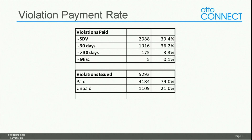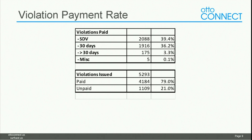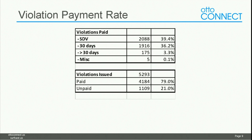Violation payment rate: 79% of people who received a citation have paid. From an industry standpoint, 70–75% is considered good, and most towns Jim works with are in the low 80s by their second or third year. Achieving 79% in the first year is very strong. The remaining 21% are either in collections or on their way to collections.